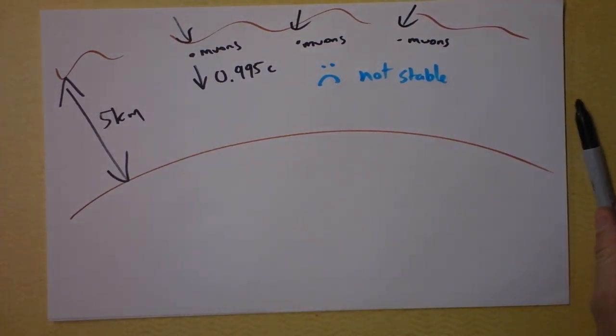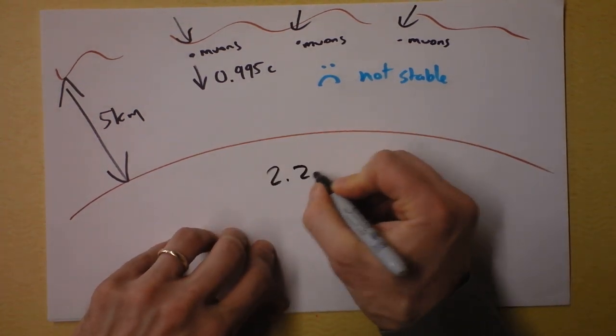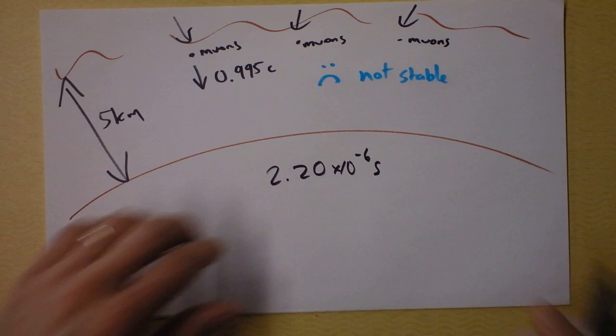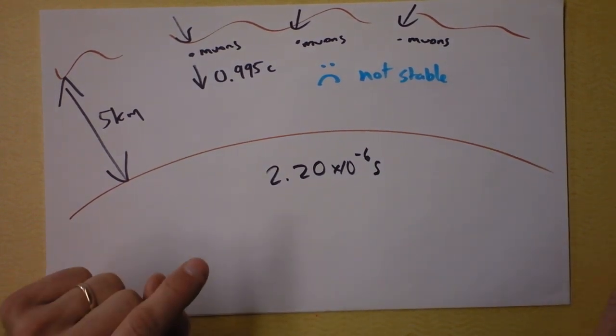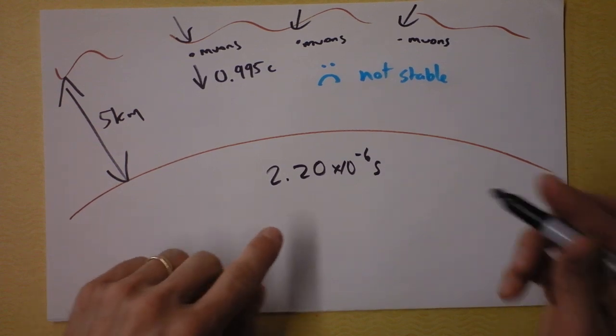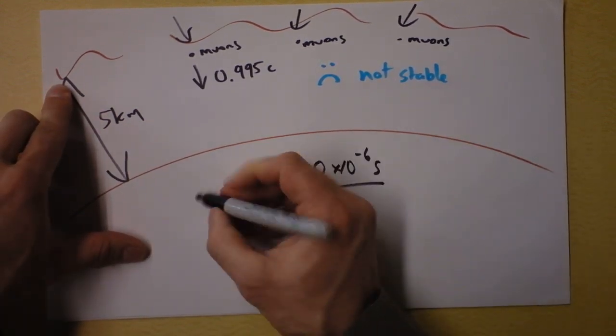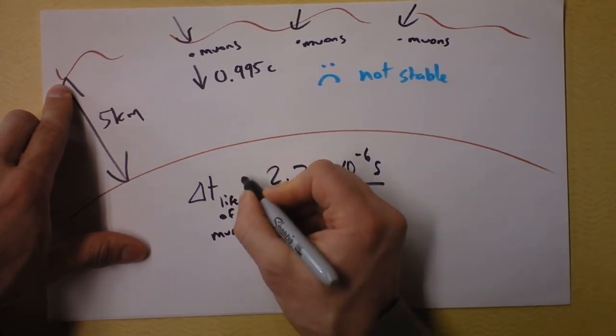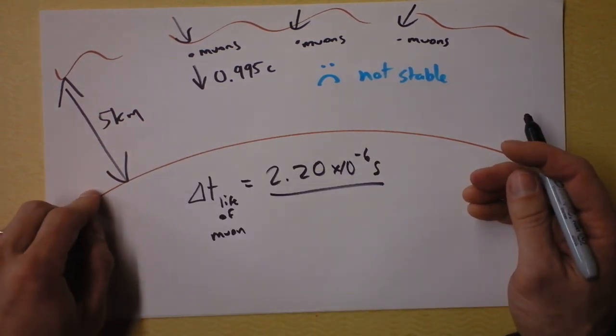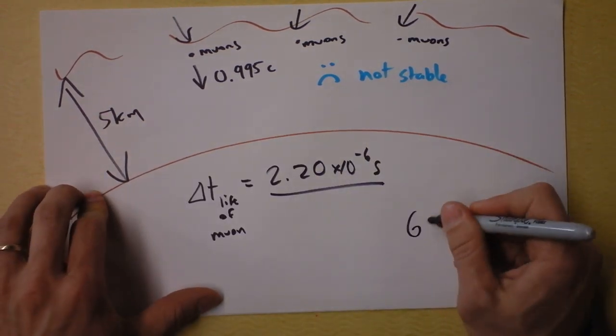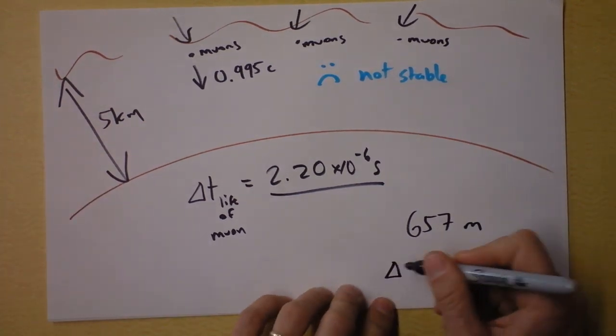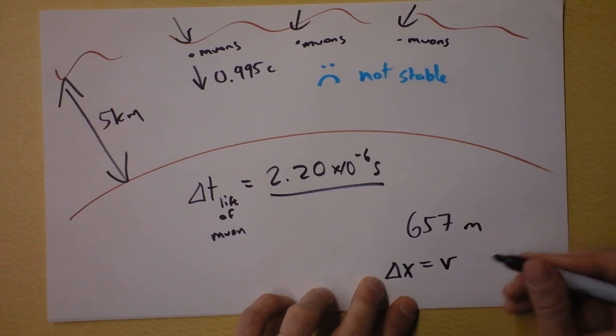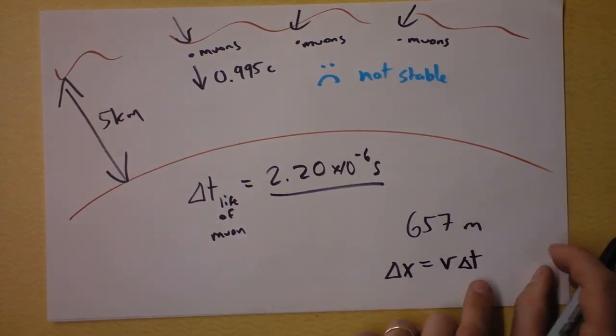And they, some of them, not all of them of course, they kind of are produced sort of all over the place. Some of them tend to head this direction. And they're moving really fast. 0.995 times the speed of light. But the thing is, a muon is not stable. Not stable. Can't handle it. But, so since the muon is not stable, it will decay. But the problem is, the muons don't get to live very long. In fact, they only live for long enough, wait a second, they only live for 2.20 times 10 to the negative 6th seconds.